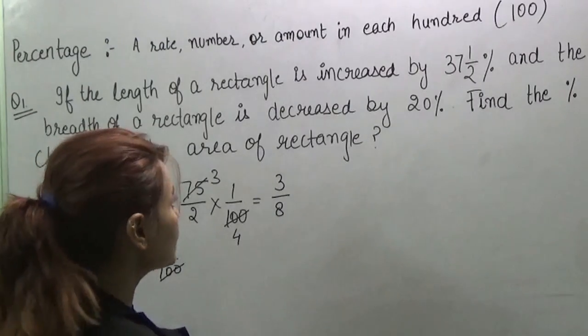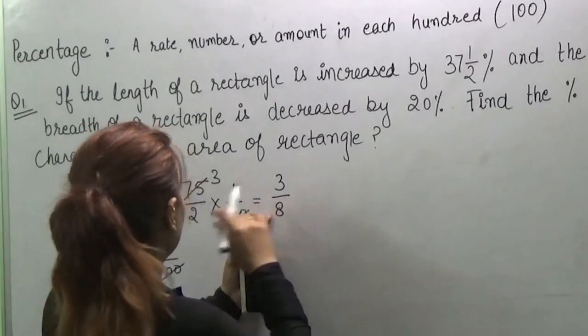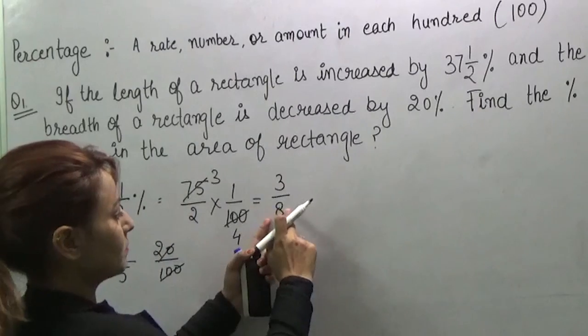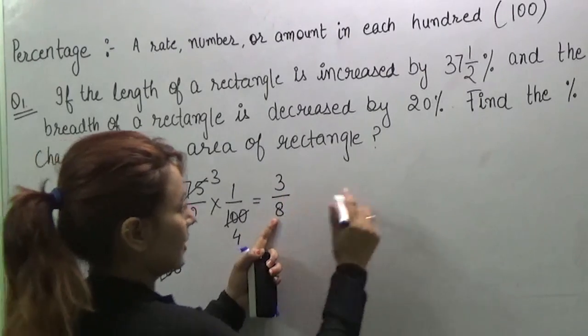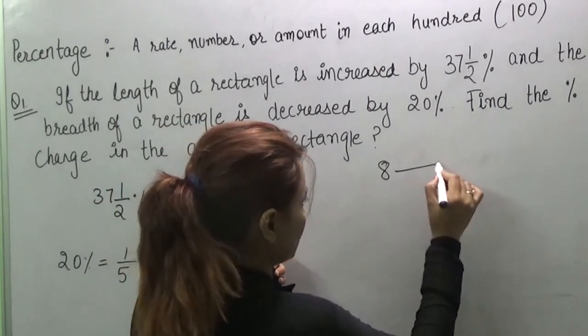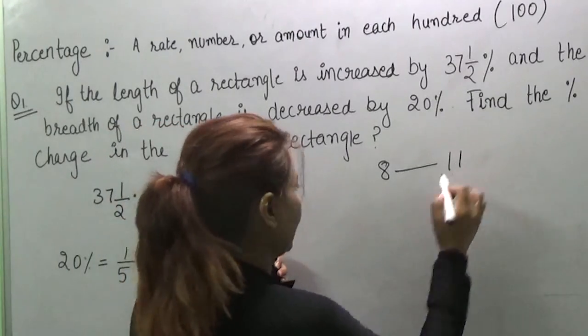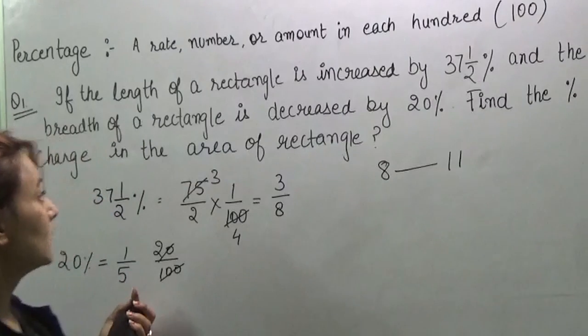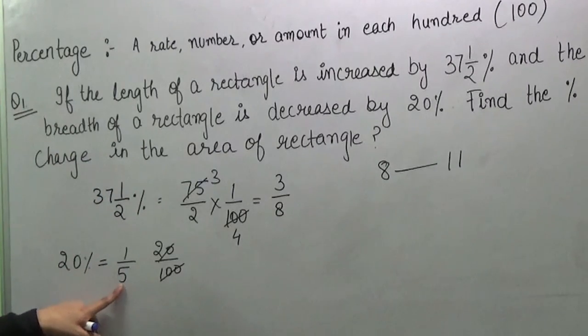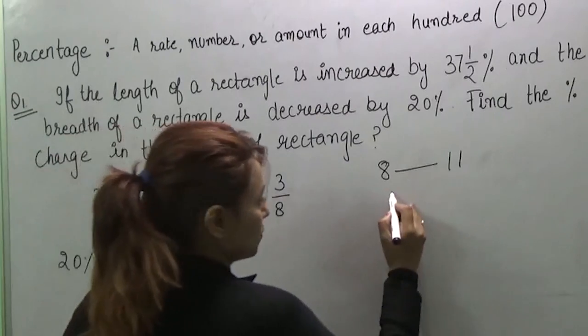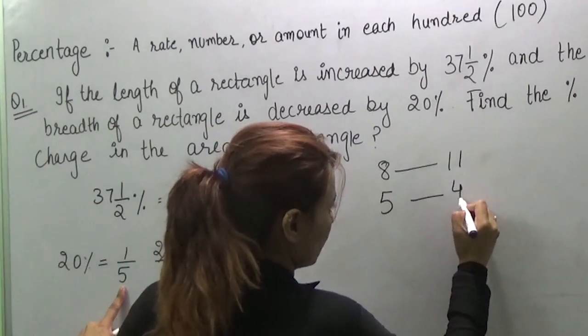So the length is increased by 37.5%, which means it is increased by 3 over 8. When we add that, we will get 11 over 8. And the breadth is decreased by 1 over 5, so we will write 4 over 5.